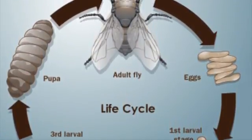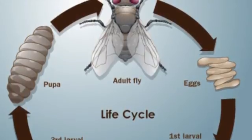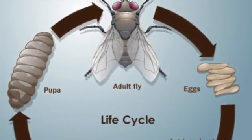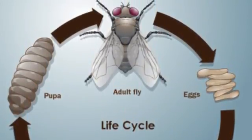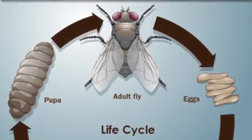Maggots are white and legless and are often the ones feeding on manure and decaying matter. Pupae are similar in function to butterfly cocoons and get darker as they near the adult stage.